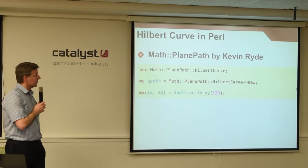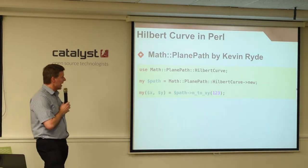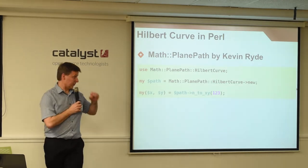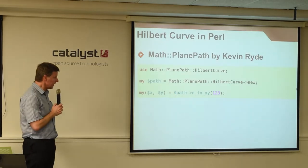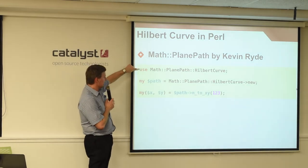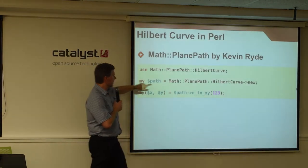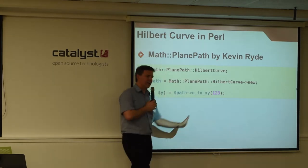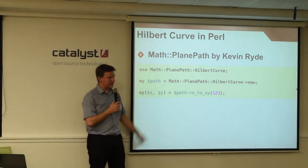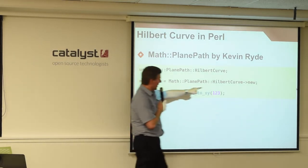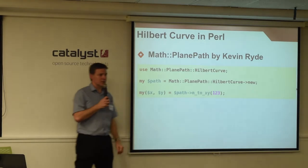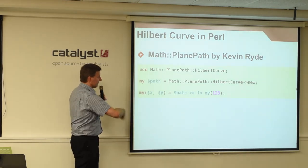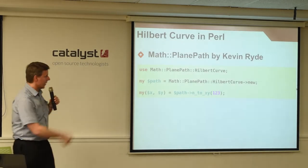Fortunately, I didn't have to worry too much about that because there was a module on CPAN called Math::PlanePath::HilbertCurve, part of a distribution by Kevin Ryde called Math::PlanePath that has lots of different space-filling algorithms. To use it, I had to load the module, create an instance of that object, and then pass it a number being the index in the list, and it returns XY values. I was really surprised at how simple that was. This particular algorithm always fills from the top left corner out, and so it tells you how big your plane is going to be.